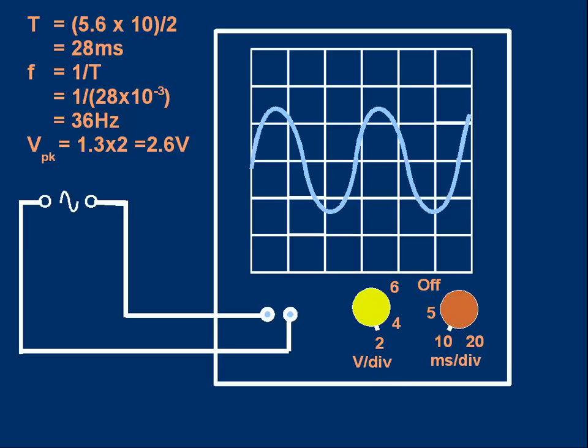How about the peak voltage? We measure from the zero position, which is the middle, to the maximum. What's the height of the graph? It's 1.3 divisions. And each division is 2 volts on the y-axis, because the setting is 2 volts per division. The peak voltage is 1.3 times 2. It's 2.6 volts.